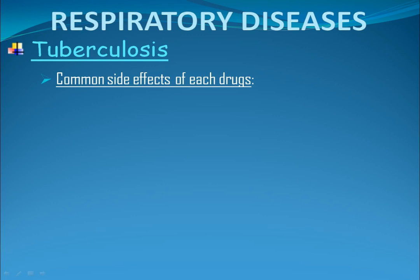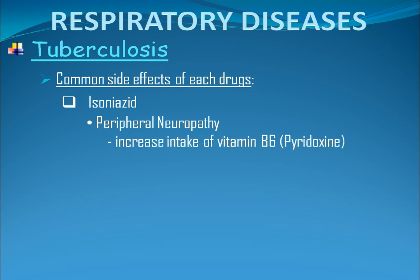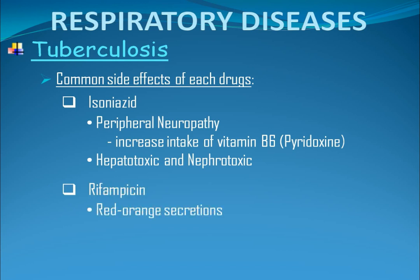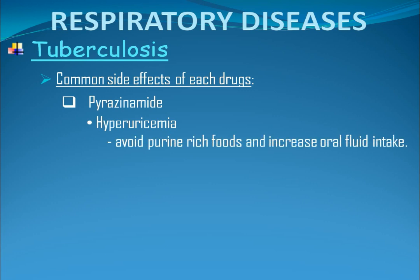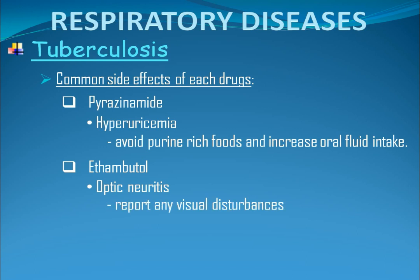Common side effects of each drug: Isoniazid causes peripheral neuropathy, therefore increase intake of vitamin B6; it is also hepatotoxic and nephrotoxic. Rifampicin causes red-orange secretions and is hepatotoxic and nephrotoxic. Pyrazinamide can cause hyperuricemia, therefore avoid purine-rich foods and increase oral fluid intake. Ethambutol causes optic neuritis, therefore inform the patient to report any visual disturbances. Lastly, streptomycin is ototoxic and nephrotoxic.